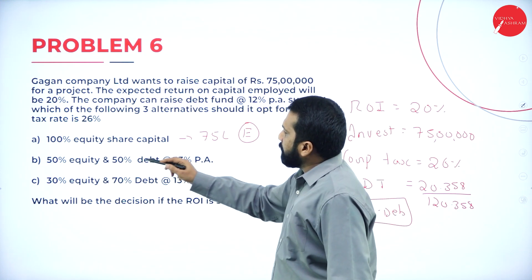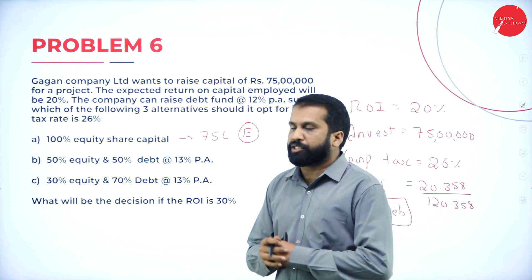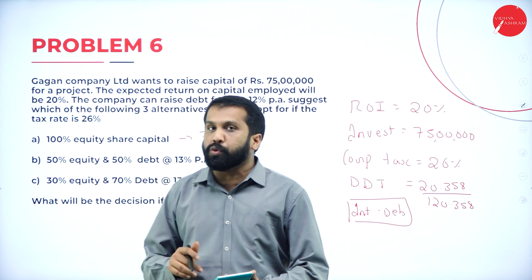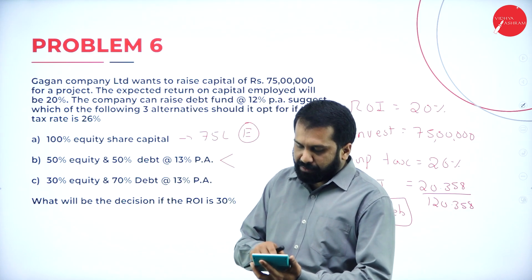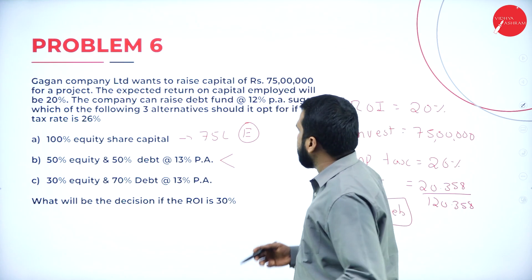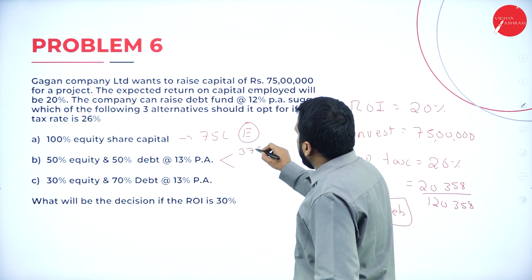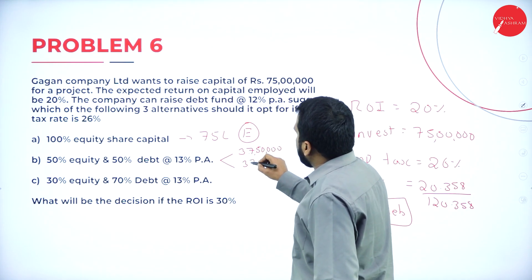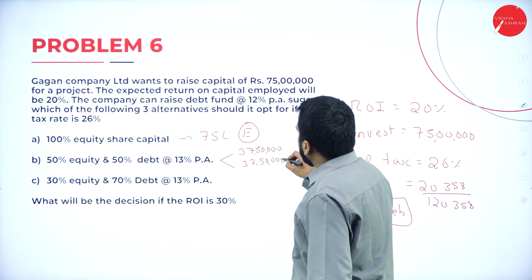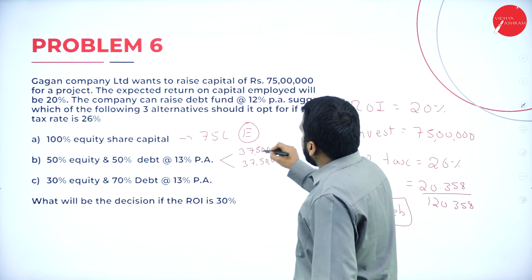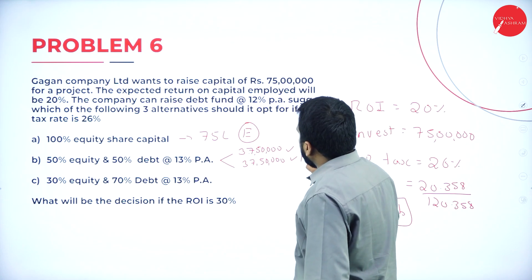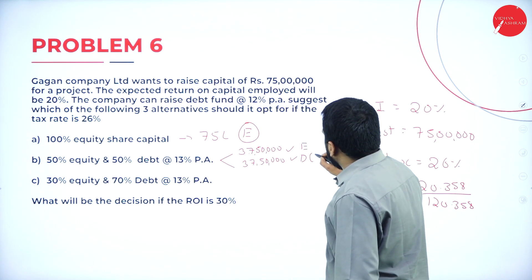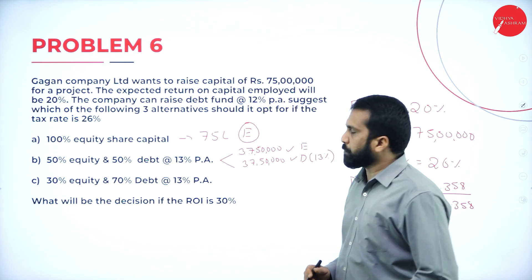Option two: 50% equity and 50% debenture. It will be 75 lakhs divided by 2, which is 37 lakhs 50,000 equity and 37 lakhs 50,000 debenture. The debenture interest rate is 13%.